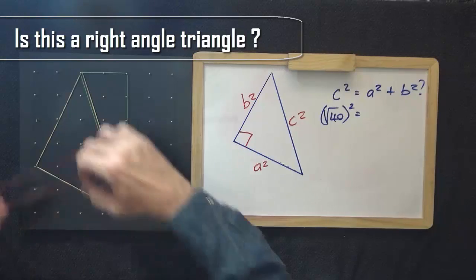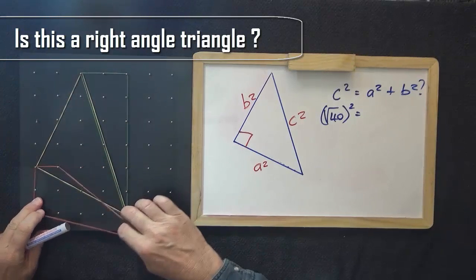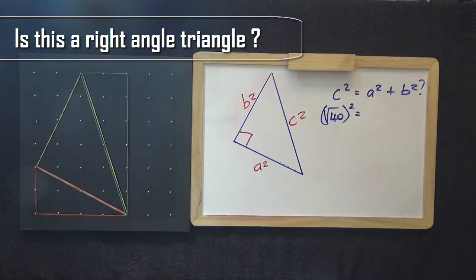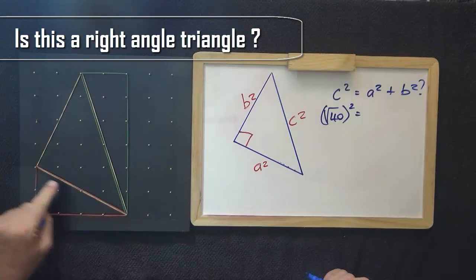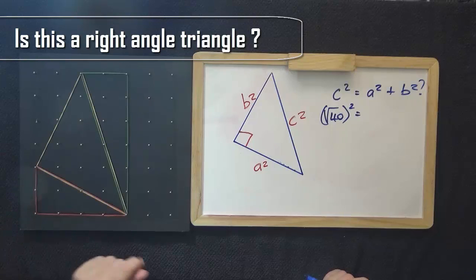Now for the other side, here, let's say this side. This side will be the square root of 4 squared plus 2 squared, which is the square root of 20.